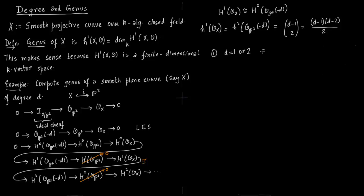So an example is that if d is 1 or 2, then obviously genus is 0. For d equals 1, X is a line, and for d equals 2, X is a conic section. For d equal to 3, X is an elliptic curve, and elliptic curve itself is a big area of research.